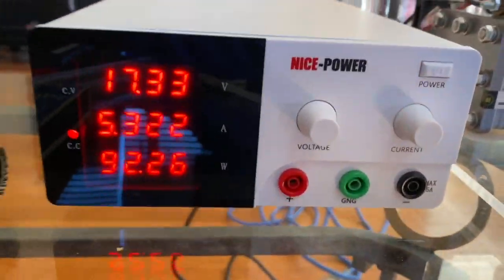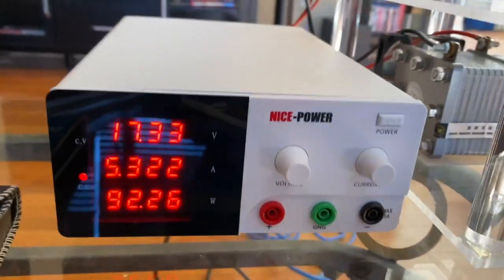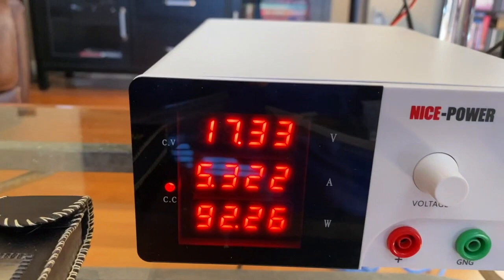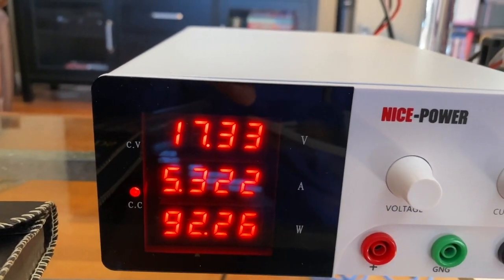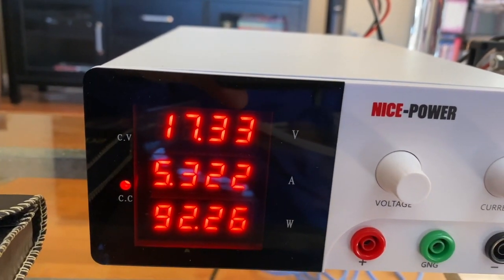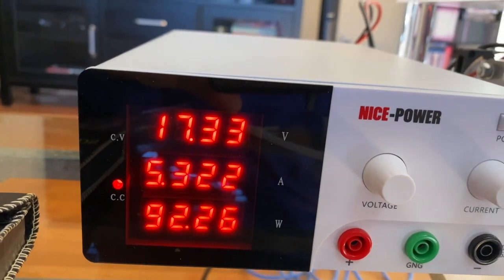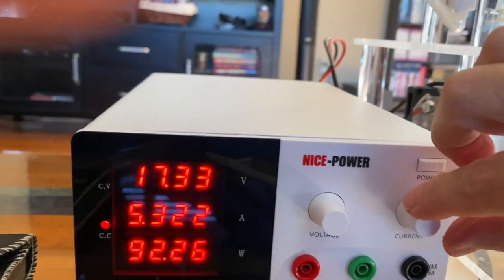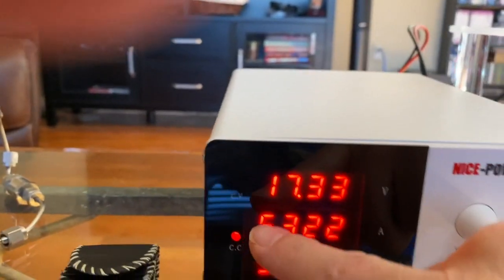Right now I've got it set really low. It is only drawing 1.7 volts per cell. So I said 10 cells, 17.3 volts, that's 1.73 volts per cell. It's only taking 92 watts.